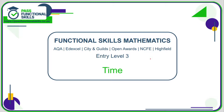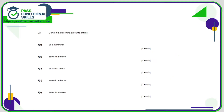Let's take a look at time questions. Question number one: we need to convert the following amounts of time — we can use a calculator, but most of these are pretty easy. 60 seconds in minutes: we know 60 seconds is one minute. For 180 seconds, 180 divided by 60 gives us three minutes.